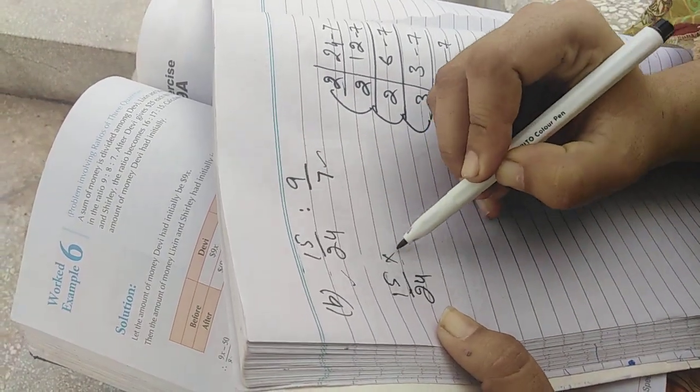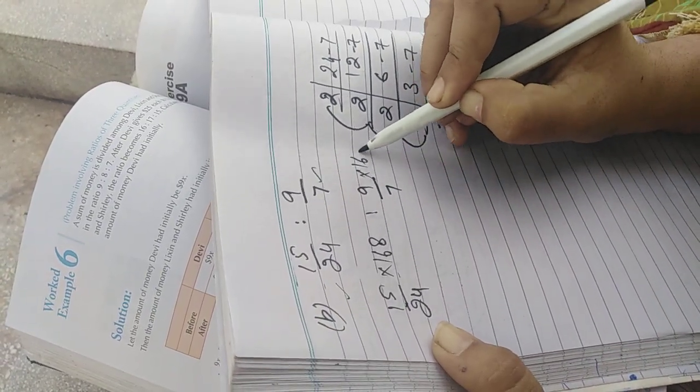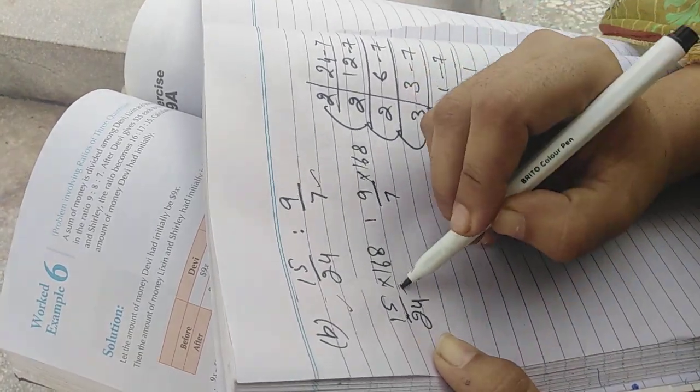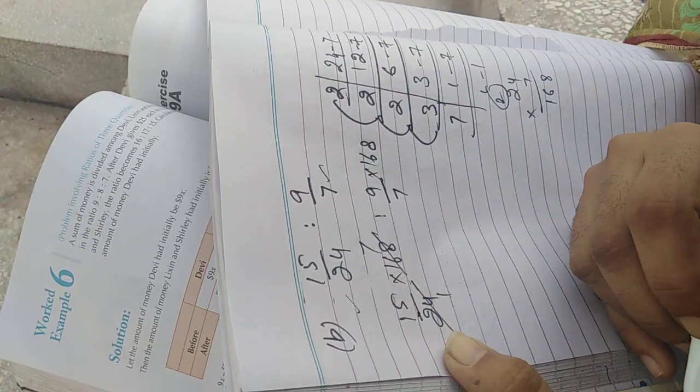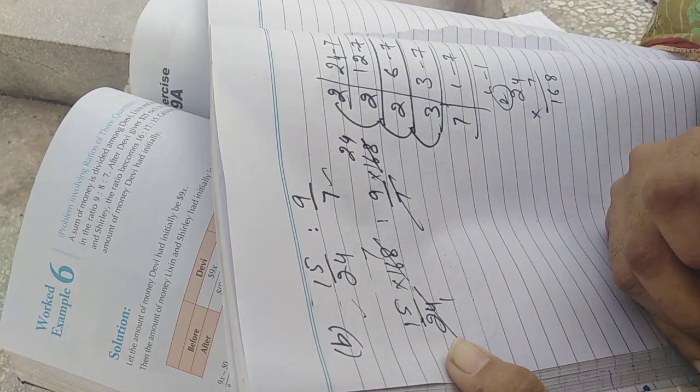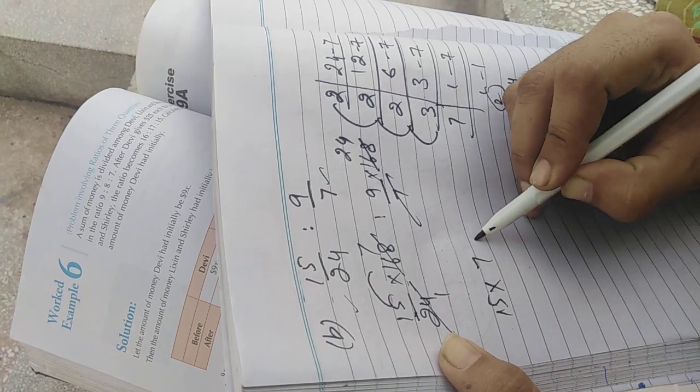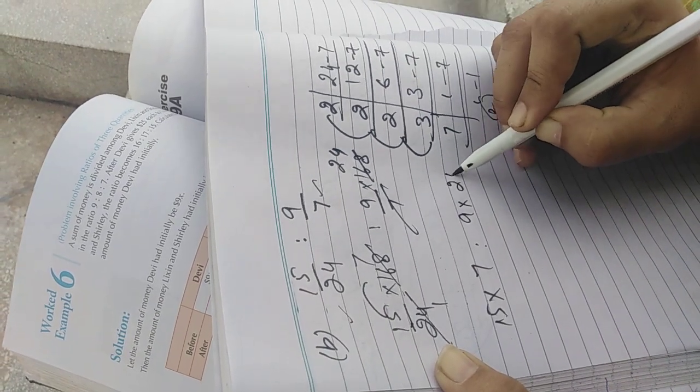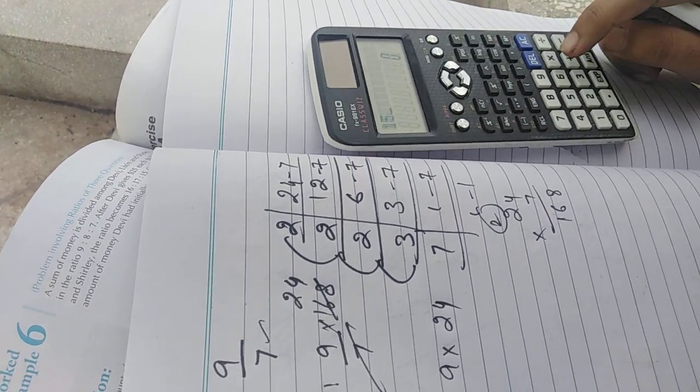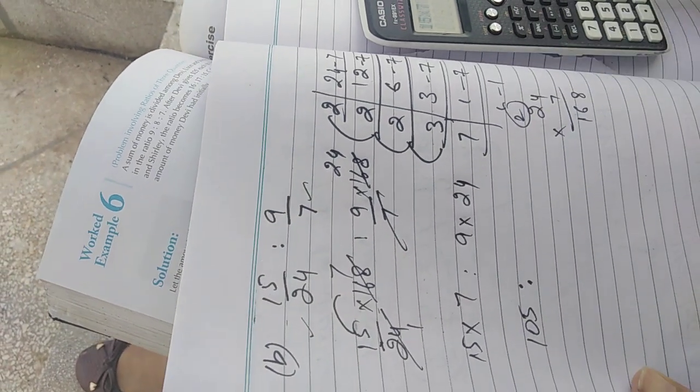Now what you have to do is multiply each fraction by the LCM. 24 sevens are 168 and 7 twenty-fours are 168. Now multiply the numerators: the numerators are 15 and 7, and 9 and 24. Multiply 15 and 7, it will become 105.